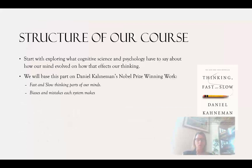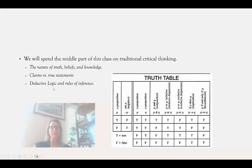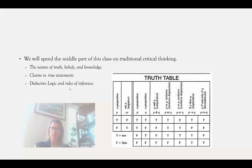The structure of our course: we're going to start by exploring what cognitive science and psychology have to say about how our mind evolved and how that affects our critical thinking. We'll base this part on Daniel Kahneman's Nobel Prize-winning work on fast and slow thinking and the biases and mistakes each system makes. The second part of the course, the middle part, will focus on the traditional critical thinking method: what is the nature of truth, what are beliefs, what's knowledge, what's the difference between a claim and a true or false statement, and then we'll look at deductive logic and the rules of inference — when do premises add up to a sound argument.